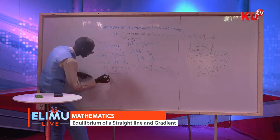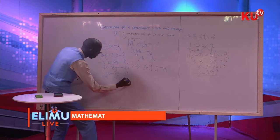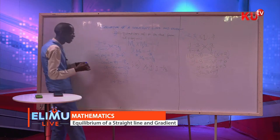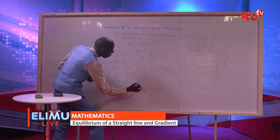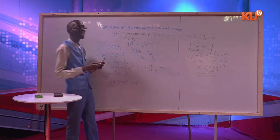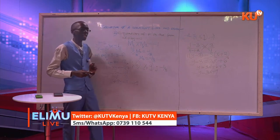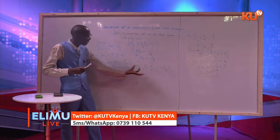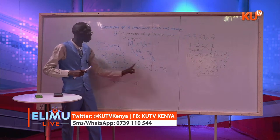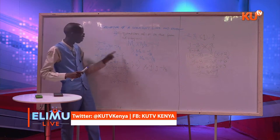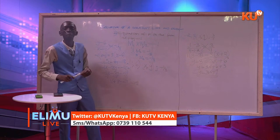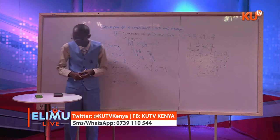Make sure that your answers are positive: divide everywhere by negative 1. Your equation will be x plus 3y is equal to 17. That is the equation of line P, which is perpendicular to line L at point negative 1, 6. Take M1 times M2 equals negative 1, get the gradient, pick the point where you are told it is perpendicular, and the general point x, y. Then y minus 6 over x minus negative 1 equals the gradient negative 1 over 3. Cross-multiply and write your equation in the form AX plus BY equals C.